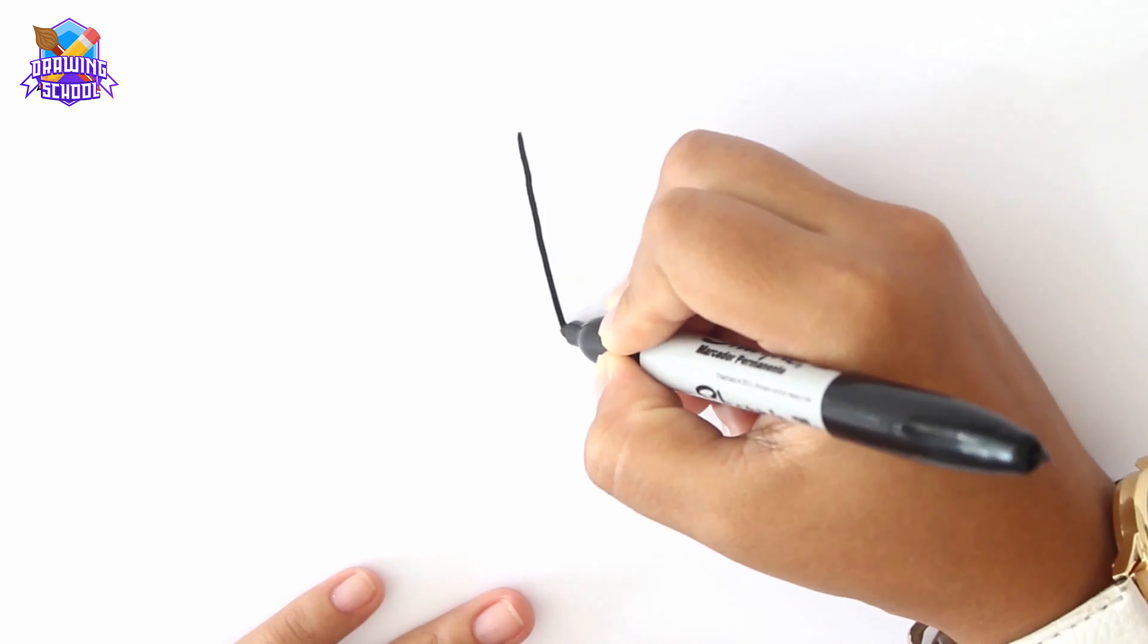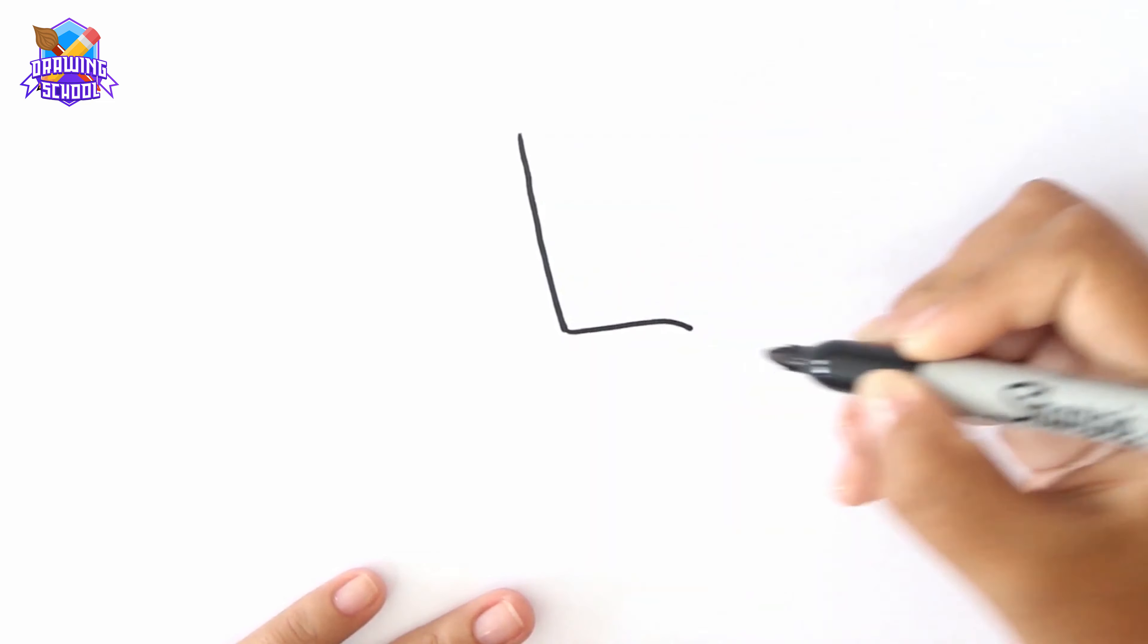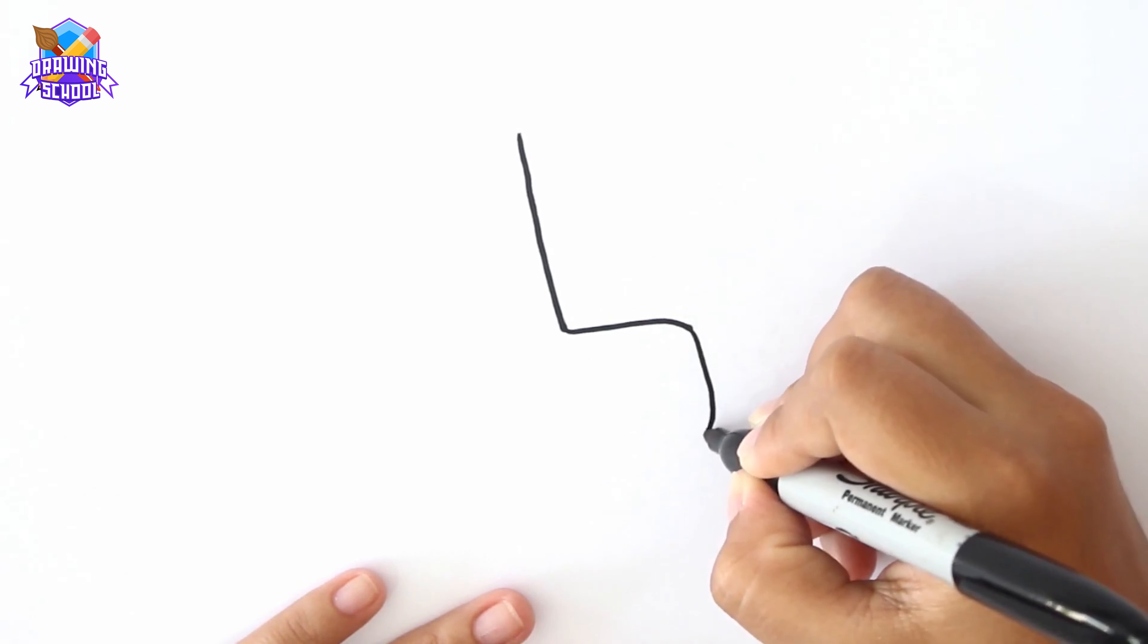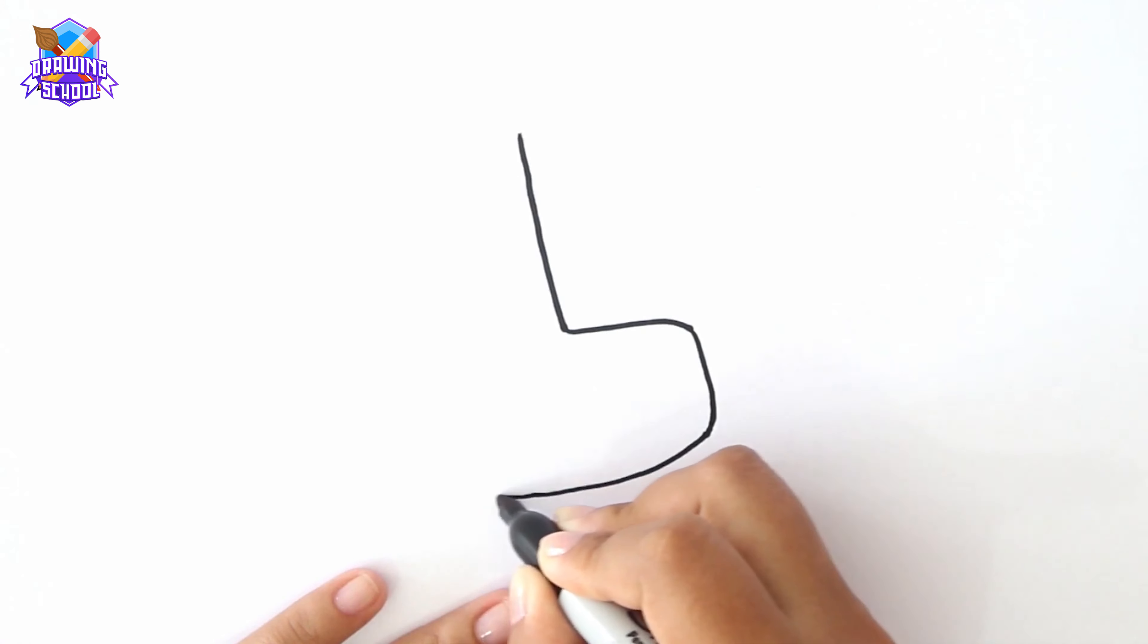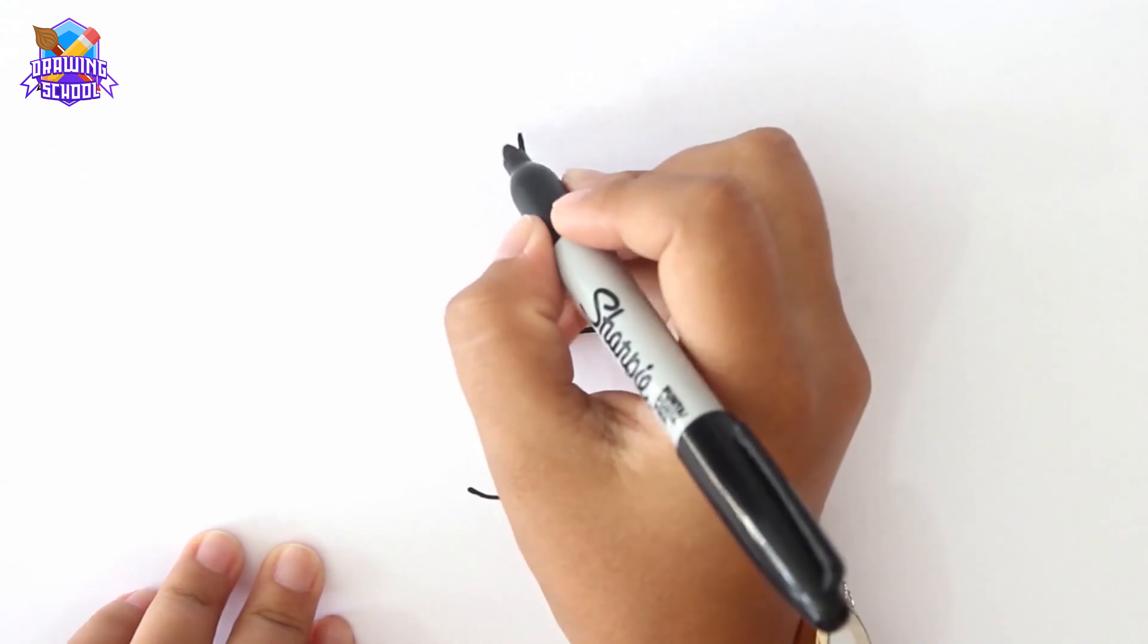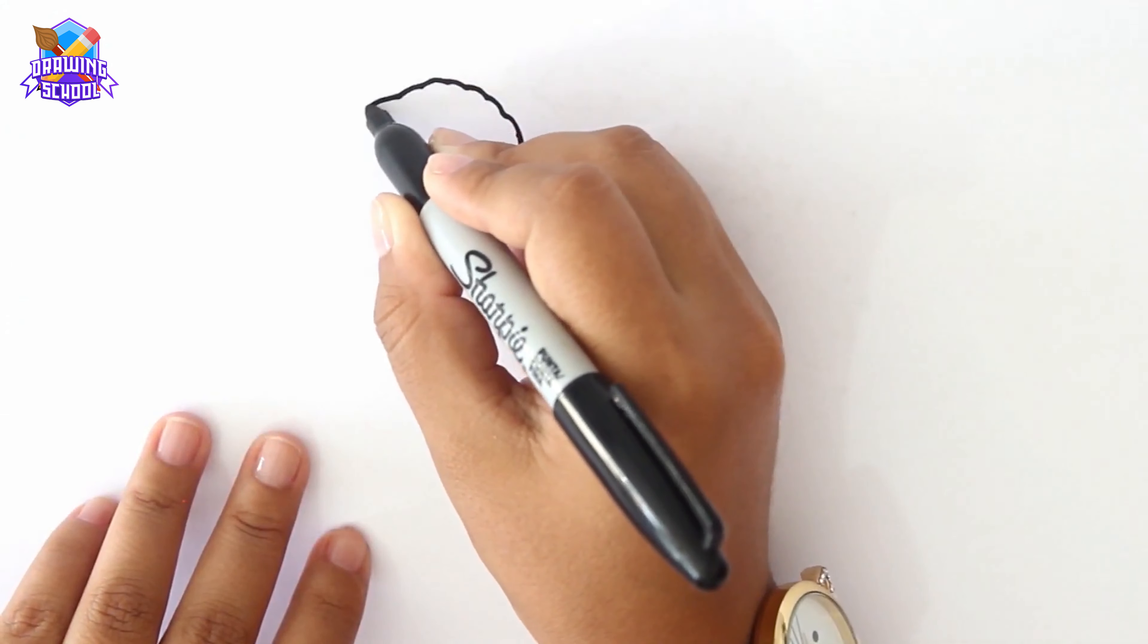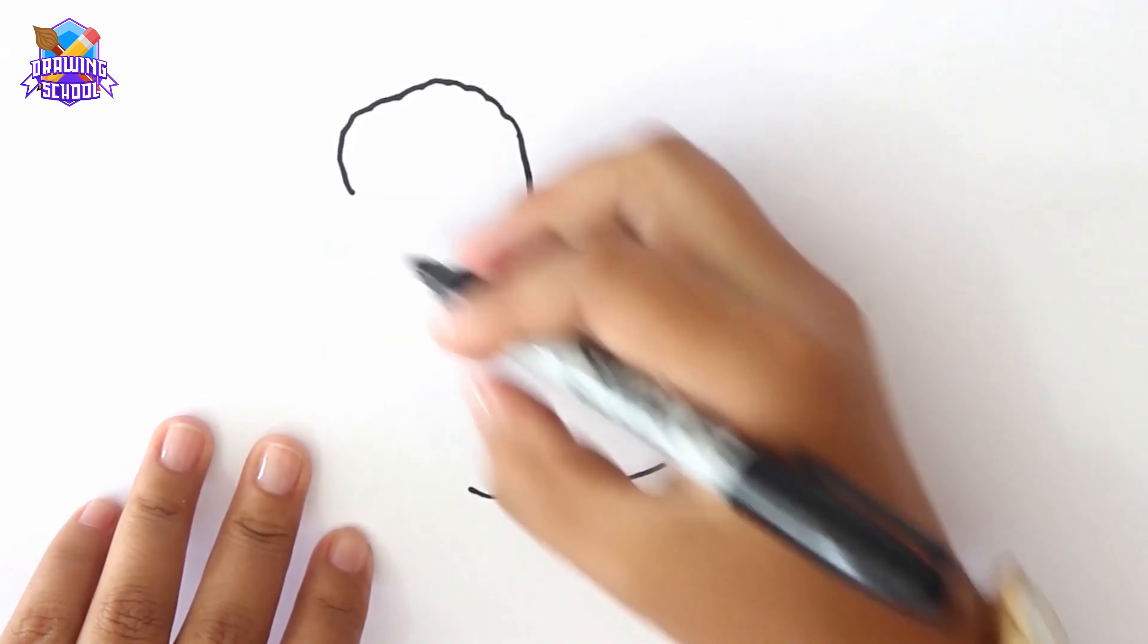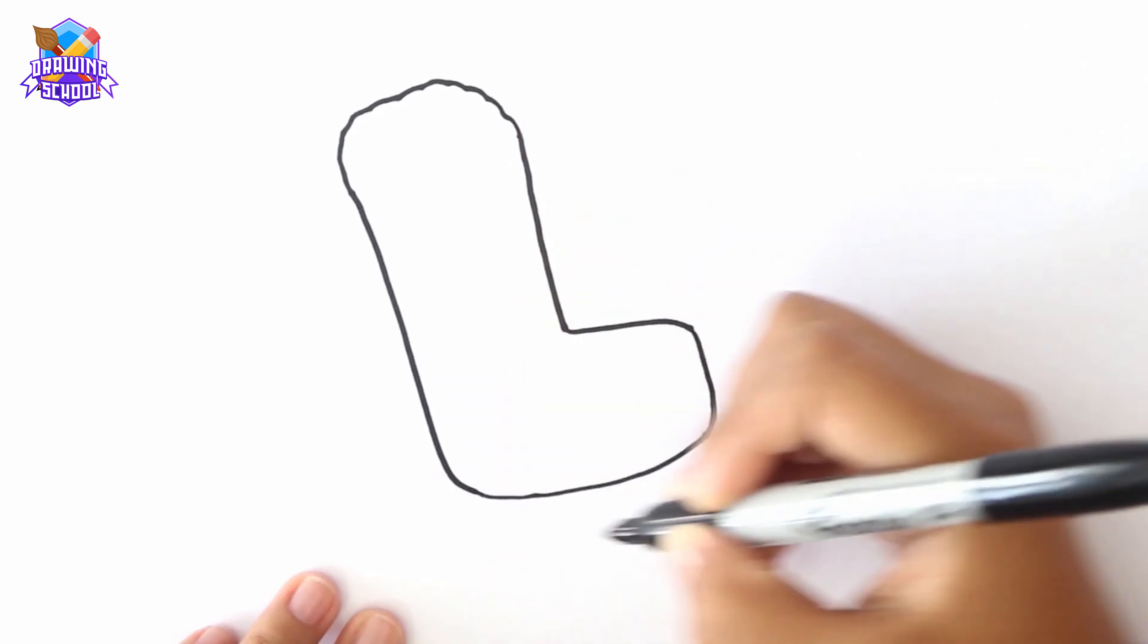We start with a straight line like this and we draw a backward C shape like this for the tip. Now we draw some wavy line in the top and we close it like this.